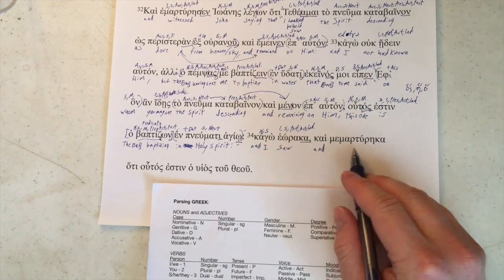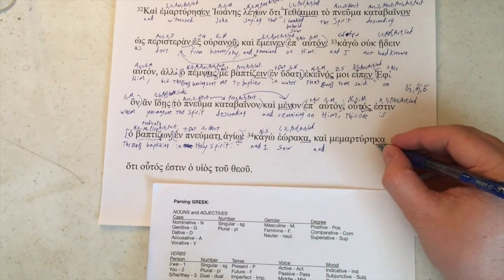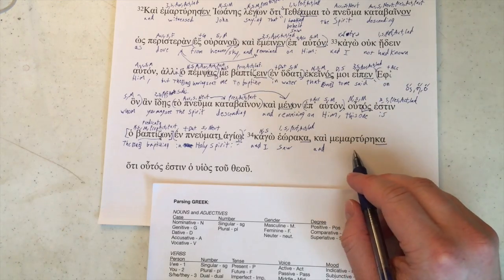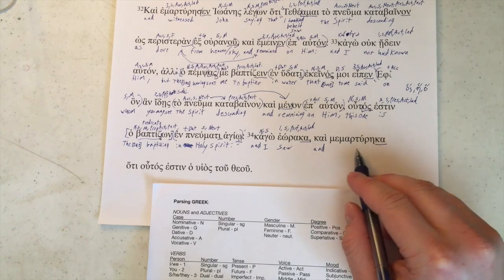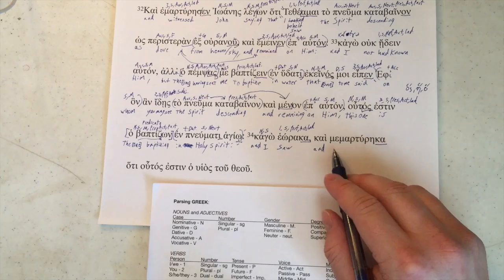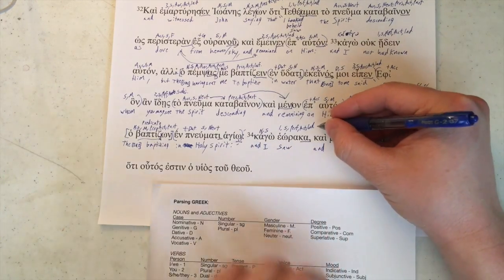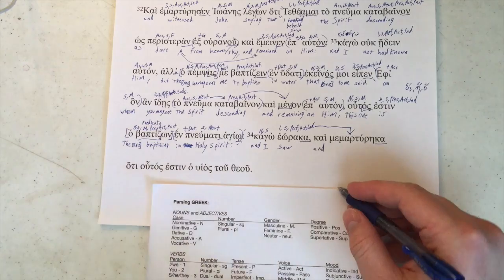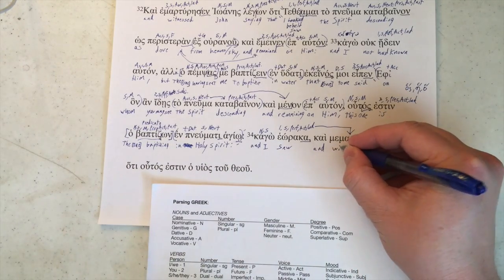chi, and me martureka. We've got Kappa Alpha again, so this would be martureo, martureso, e marturesa, me martureka. Perfect again. The exact same one, so I'm just going to pull it over and put it right there. And witnessed.